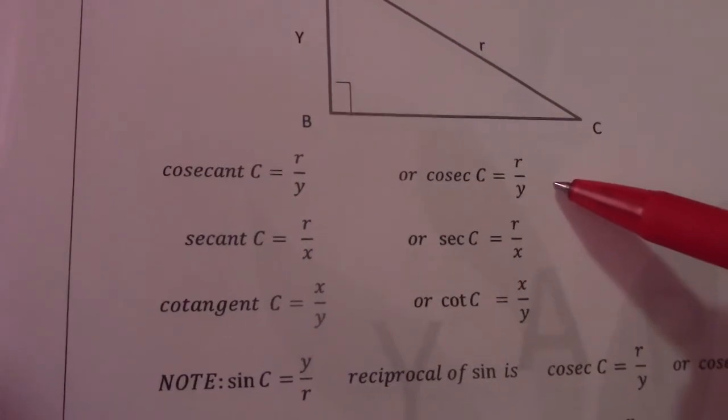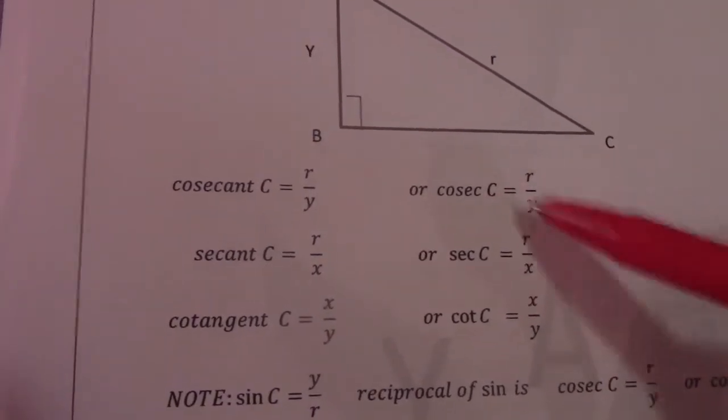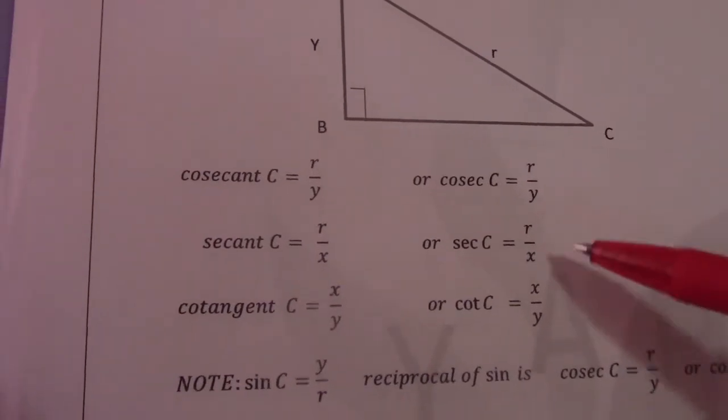So you should remember sin c was y over r, so cosec c, the y over r flips around and becomes r over y.